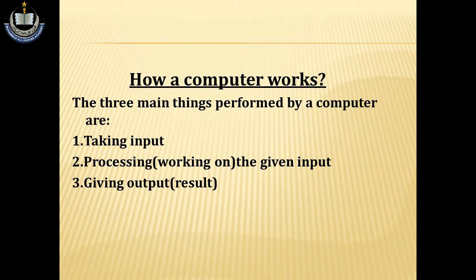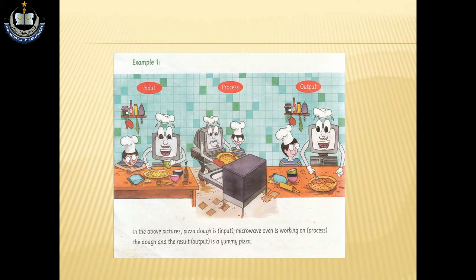Let's discuss some examples of input, processing, and output. Example number one: In the above pictures, pizza dough is input, microwave oven is working on process the dough, and the result output is a yummy pizza.